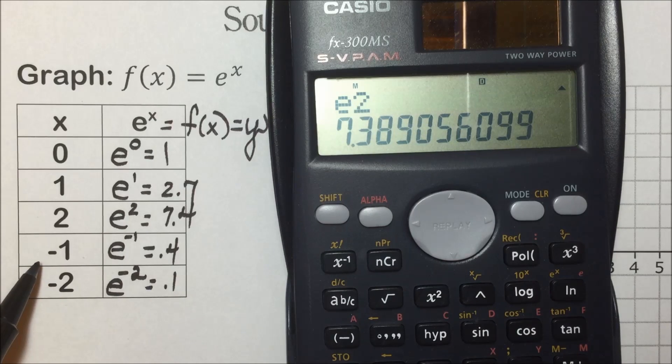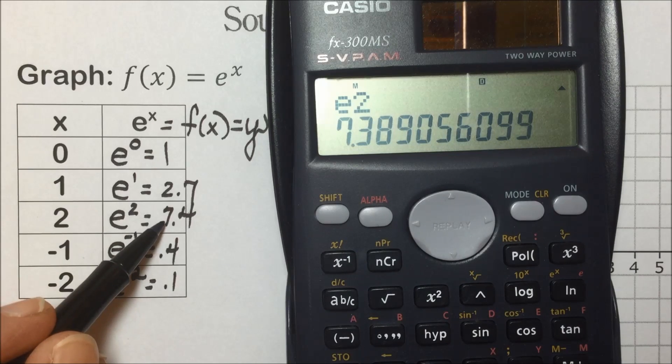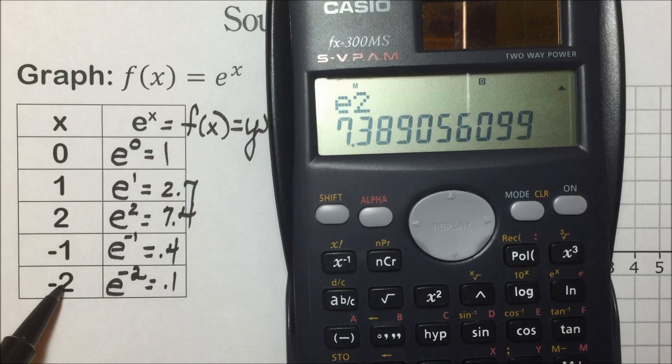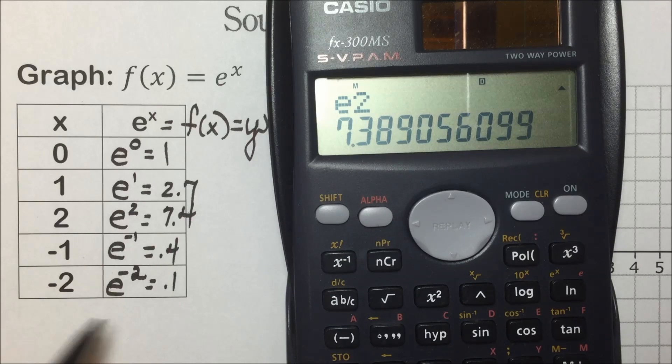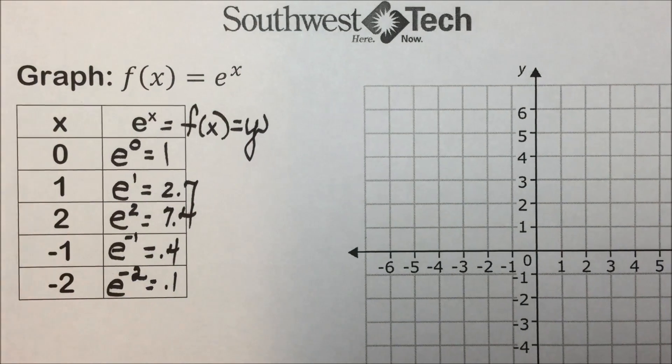As our values increase positively, our y is going to increase as well, and as our x values decrease towards negative infinity, they're going to get smaller and smaller and approach 0 as we've seen in previous graphing of exponential functions.